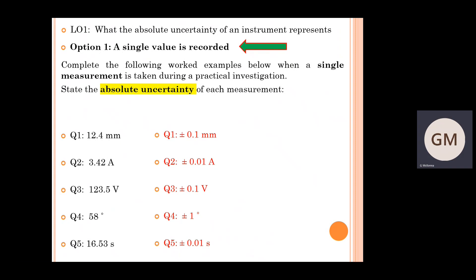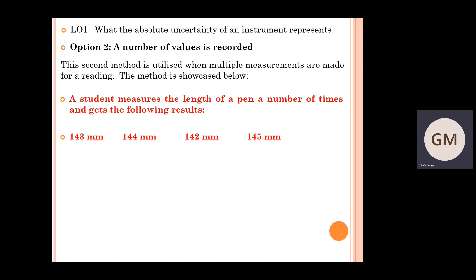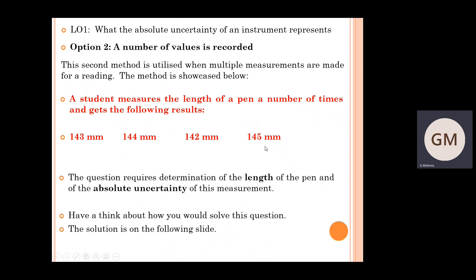That ticks off the first method for a single measurement. We'll now move on to option two, whereby a number of values have been recorded during an investigation. A student measures the length of a pen a number of times and gets the following results: 143 mm, 144 mm, 142 mm, and 145 mm. This question requires the determination of the length of the pen and also the absolute uncertainty of that measurement. Have a think about how you might approach the solution.